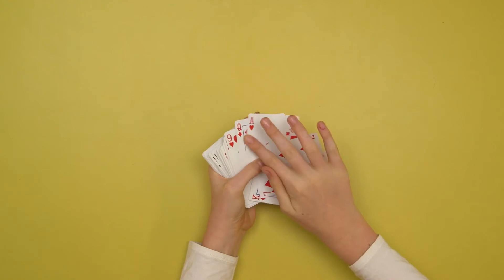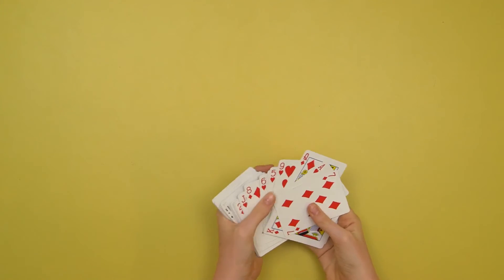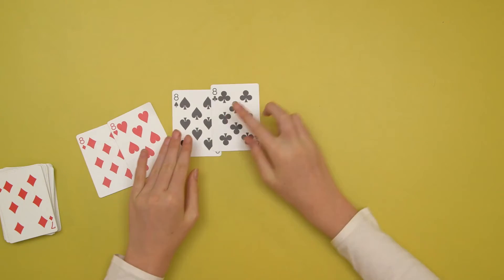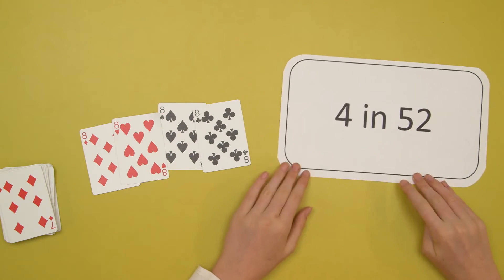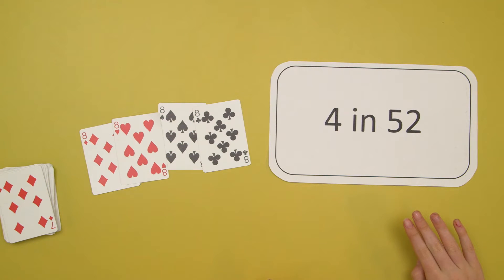Now I'm going to look for my favourite number, which is an 8. There are 4 eight cards in the deck. And if you were to look for an 8 card, you would have a 4 in 52 chance of selecting one.